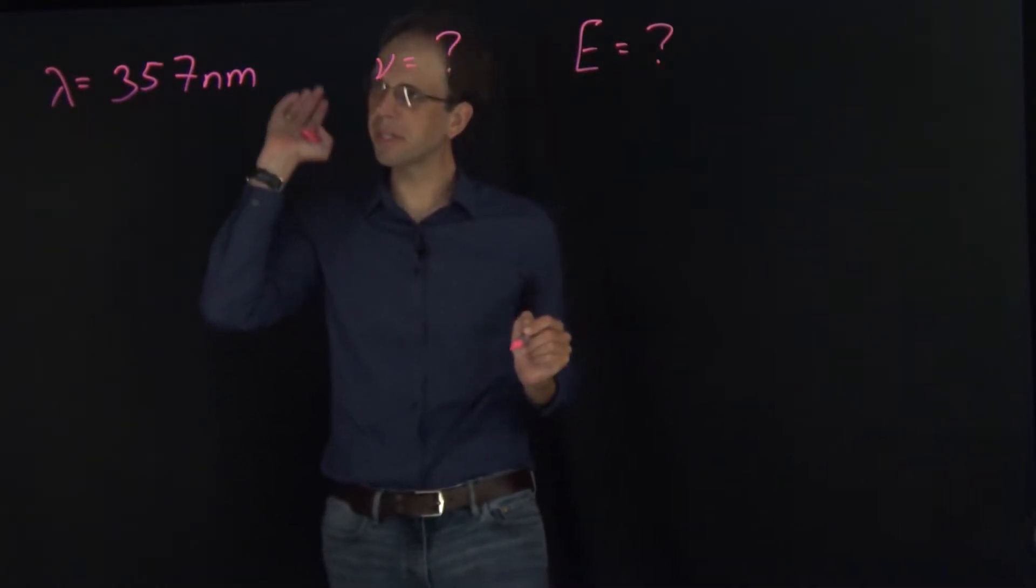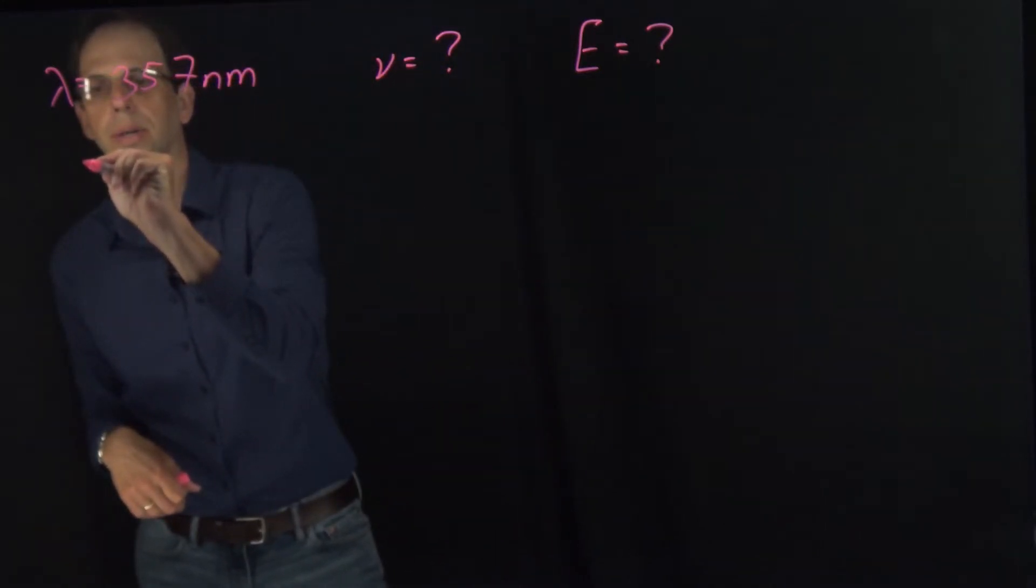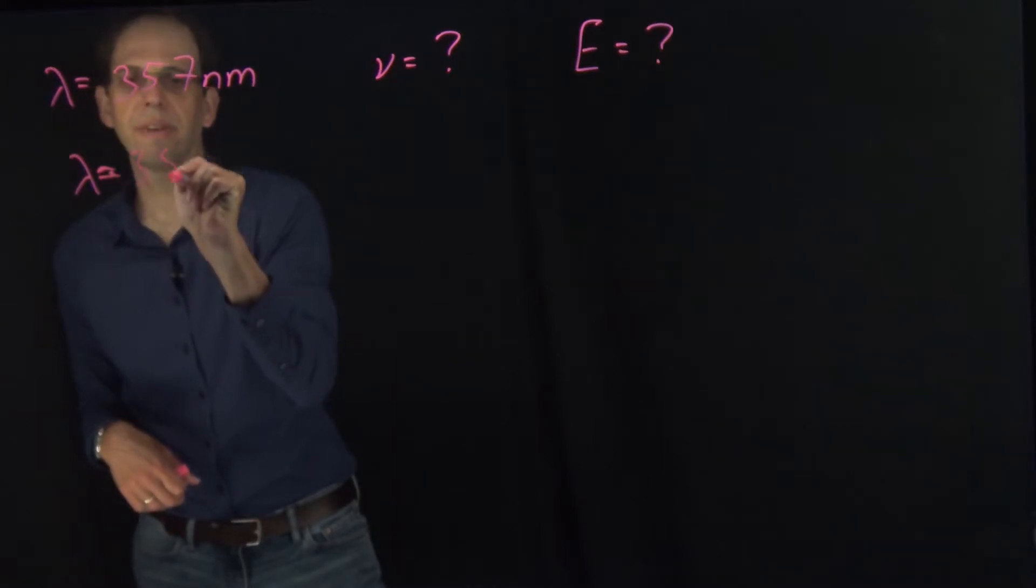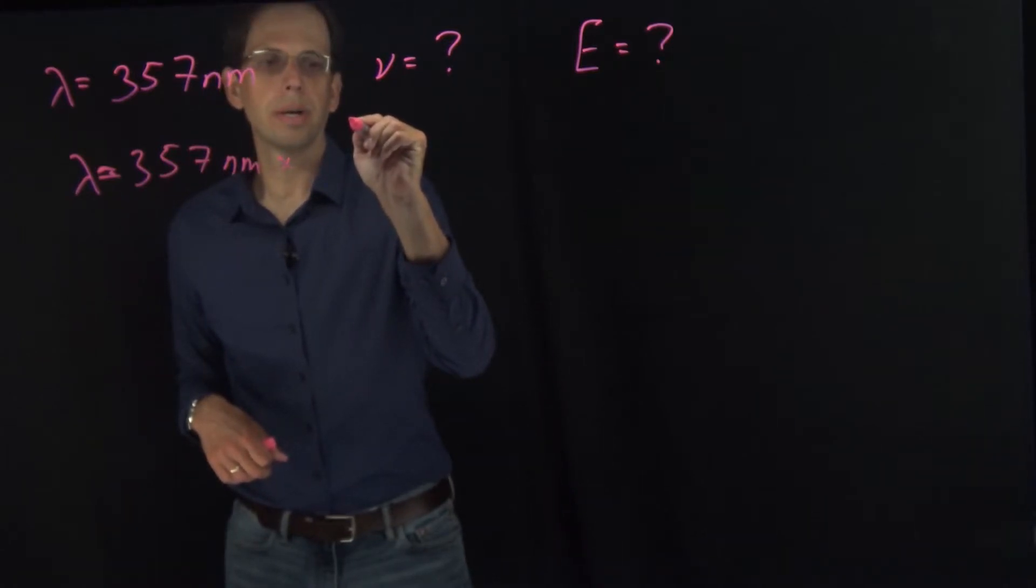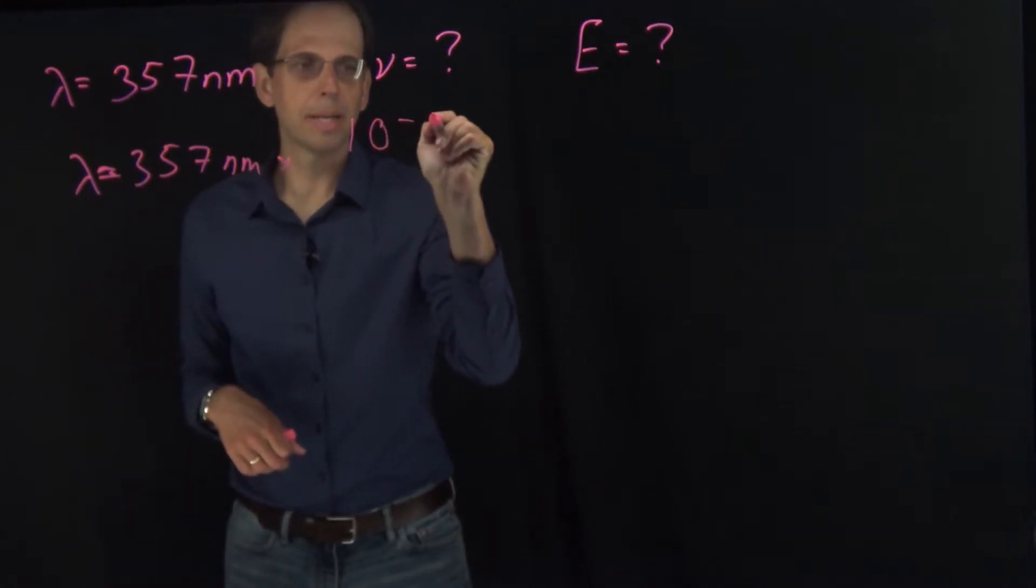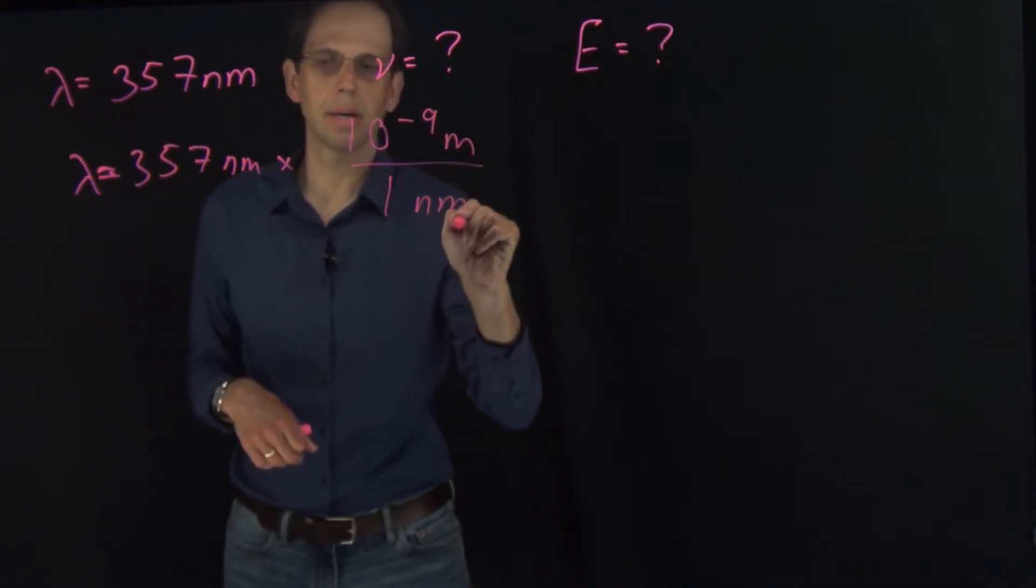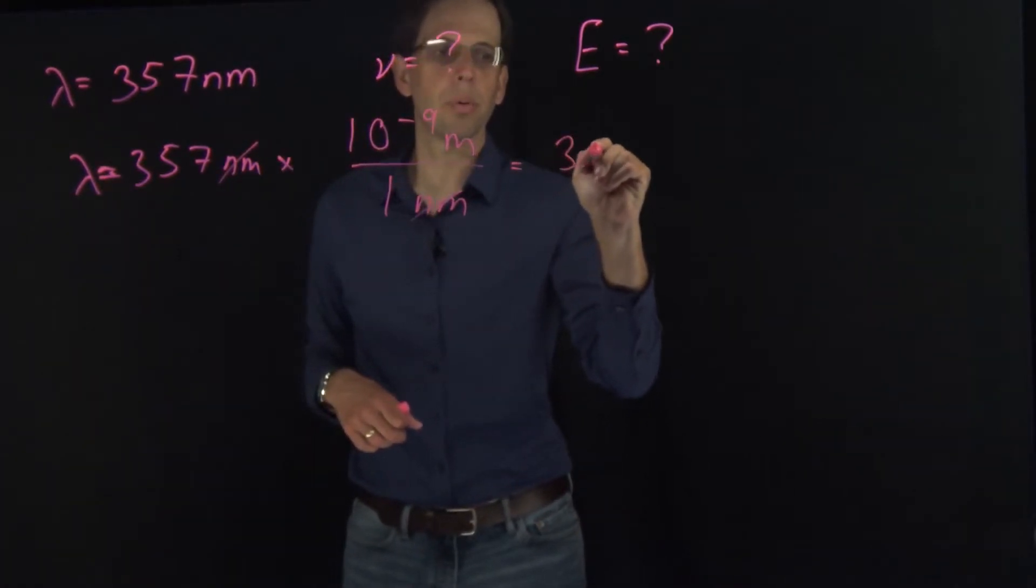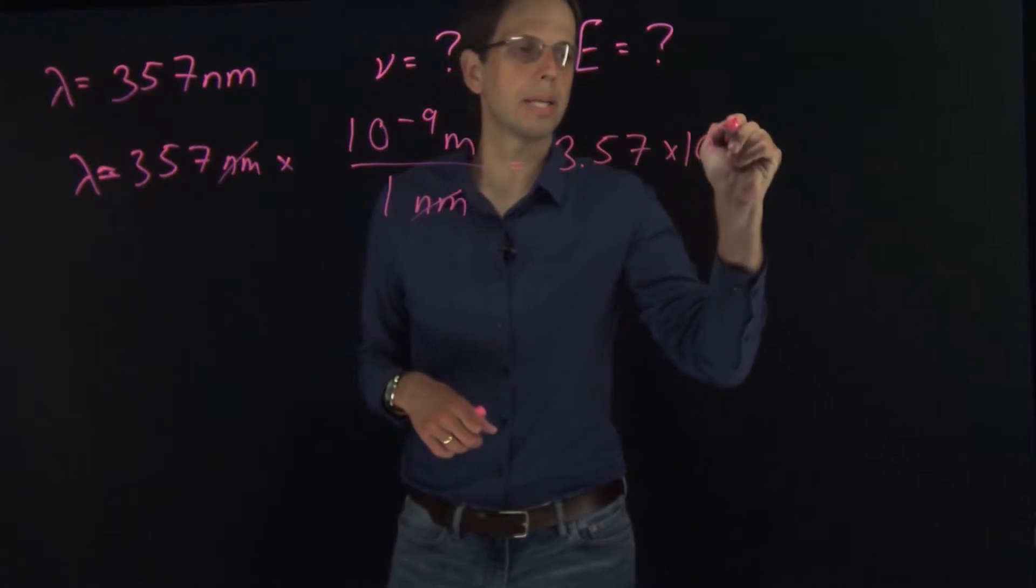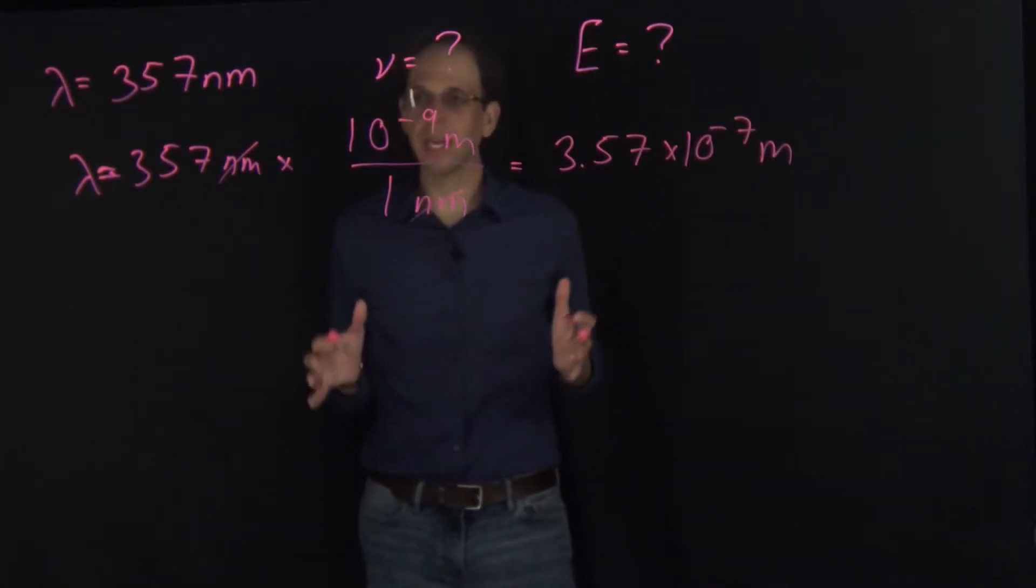The first thing I'm going to do is convert our wavelength to SI units. Our wavelength is equal to 357 nanometers times 10 to the minus 9 meters per 1 nanometer. Cancel my units and I end up with 3.57 times 10 to the minus 7 meters as my wavelength in SI units.